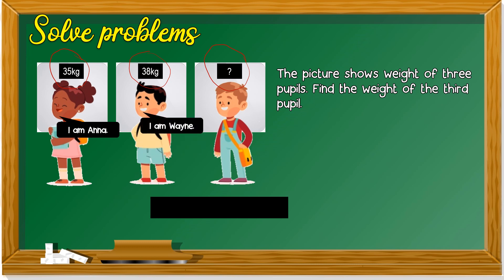I am Anna says the first pupil. I am Wayne says the second pupil. I am heavier than Anna, lebih berat dari Anna, but lighter, lebih ringan, than Wayne. Heavier than Anna, Anna is 35 kilo, but lighter than Wayne, Wayne is 38 kilo.